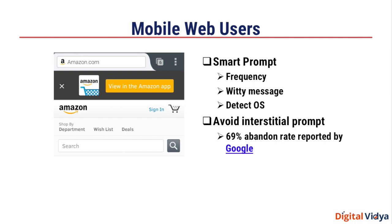So that was the first set of users you can reach — your mobile site users. Make sure the prompt is relevant, non-intrusive, and shown at a frequency that makes sense, not every single time. The users you get from this media source will probably be among your most engaged, because they are already coming to your site and using your service, making them more likely to appreciate the better experience your app offers.